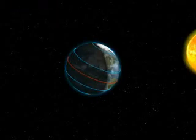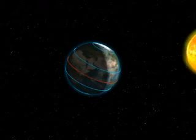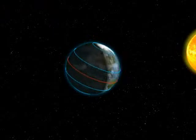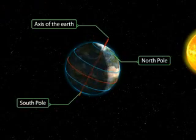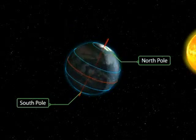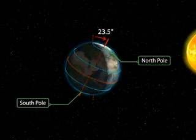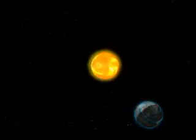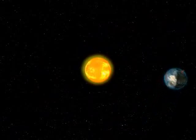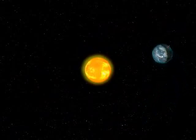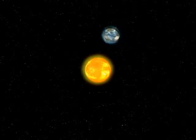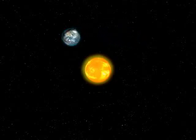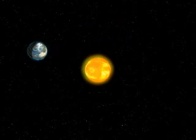The axis of the Earth is an imaginary line on which the Earth rotates. It links up the two poles. Both the axis and the Earth are tilted at an angle of 23.5 degrees during a revolution. The tilting of the axis results in direct sunlight falling on different places during different seasons, causing variations in the duration of days, nights, and seasons.